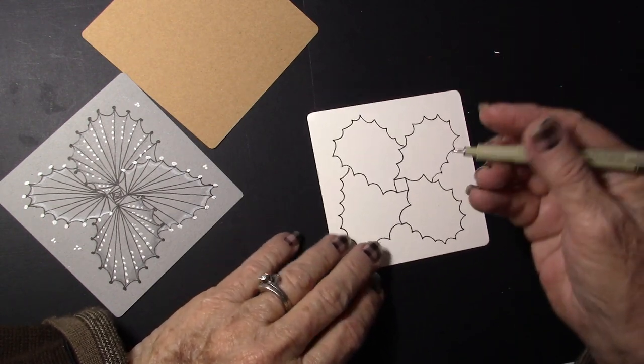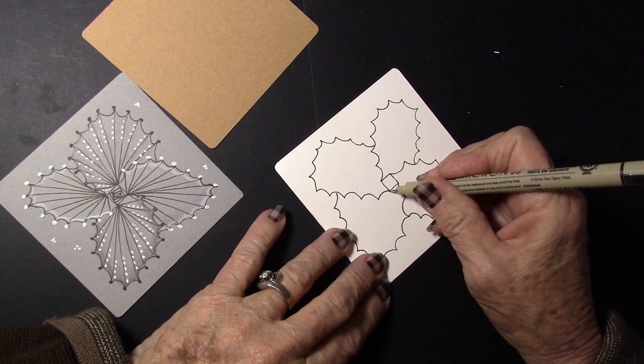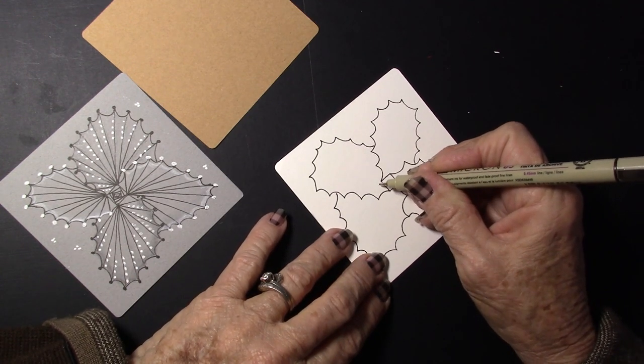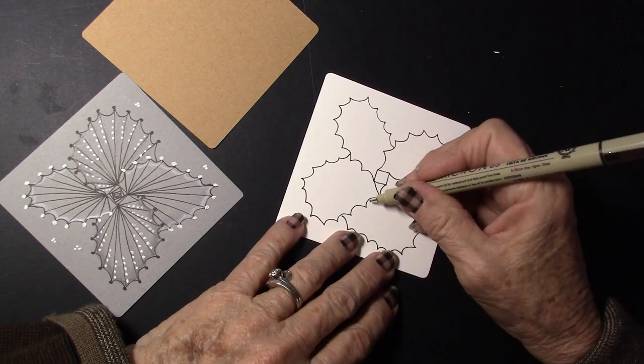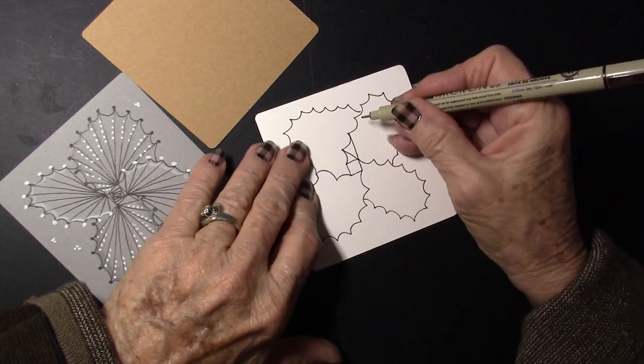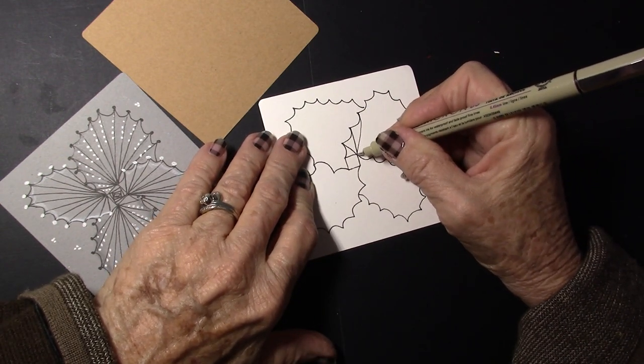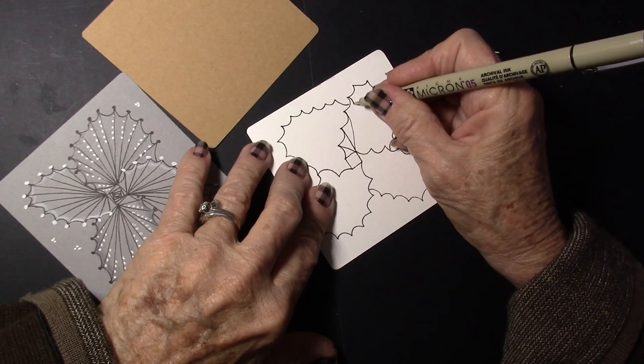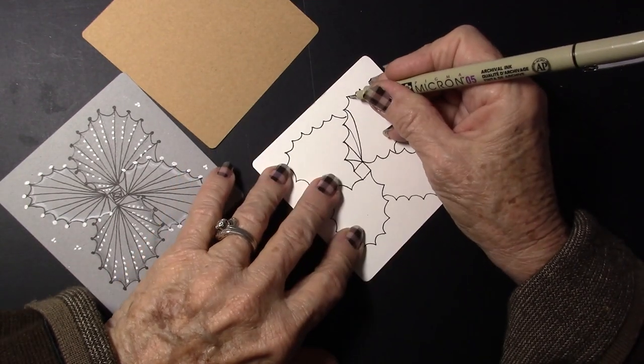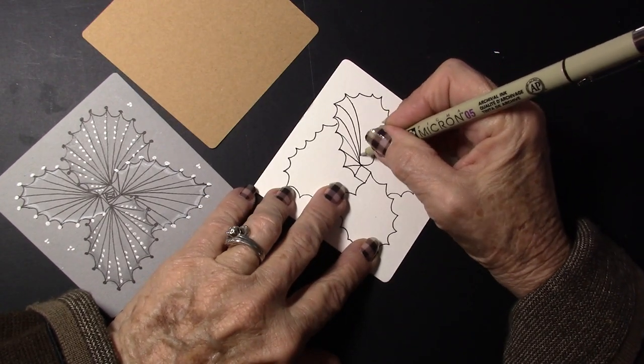And now we have them all scalloped all the way around. We're going to draw some straight lines. And I'm going to go to the corner I started on. And I'm going to draw my straight lines to this corner. And I'm going to turn it back this way because I like to draw my lines coming towards me. And if they get a little curve, I'm okay with that. It gives some texture to this tangle.